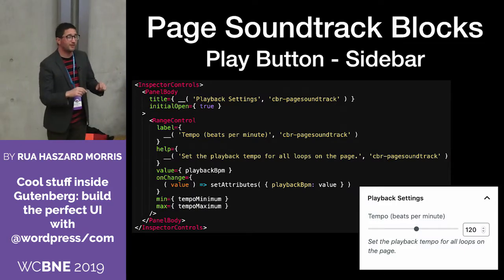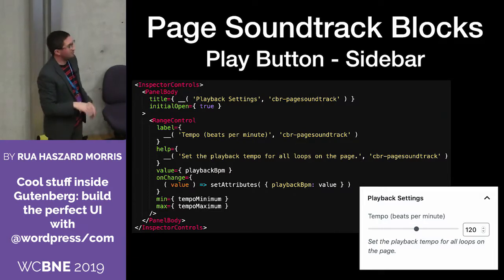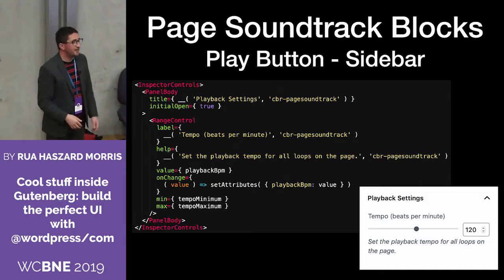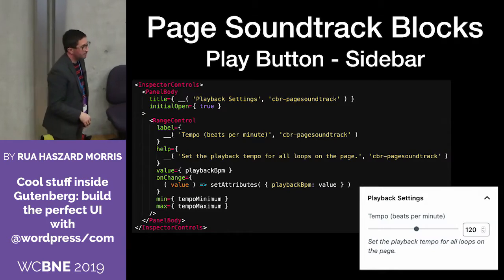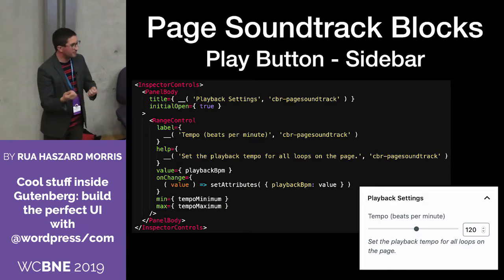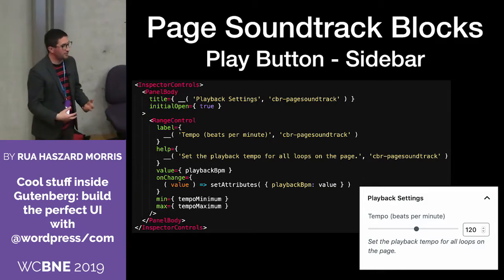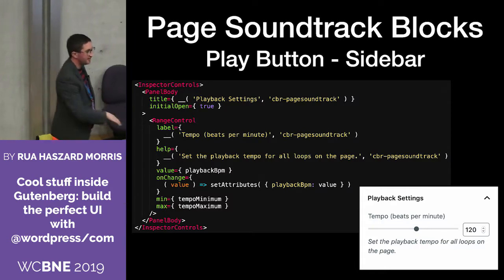The other block I built is the play button block. You can have as many of these on the page as you want, allowing the user to start and stop the soundtrack. It's got a basic setting — the tempo for how fast you want the music to play — and that's in the sidebar at the right of the editor. To do that, we use an inspector controls component, and then inside that we have a panel body, which gives us a nice place to group controls that can be collapsed away when the user doesn't need to see them. Within that, we've got a range control — a way of setting a number between two values. We pass in our playback tempo attribute from our block metadata, and when the user slides it around, that gets saved back into the attributes.